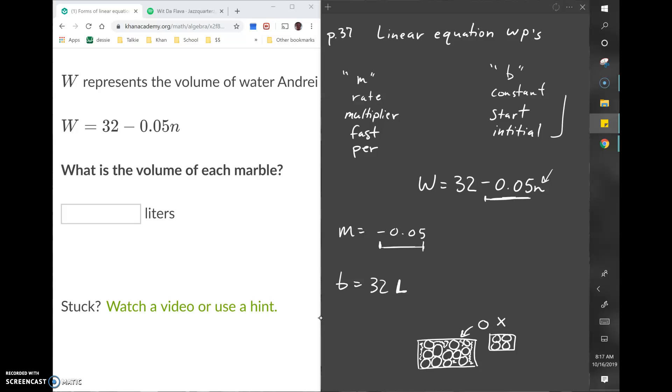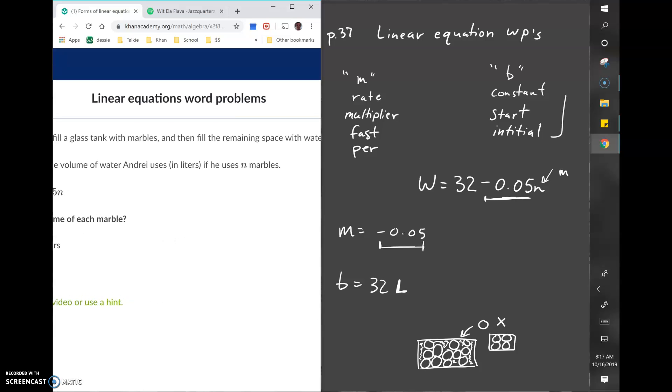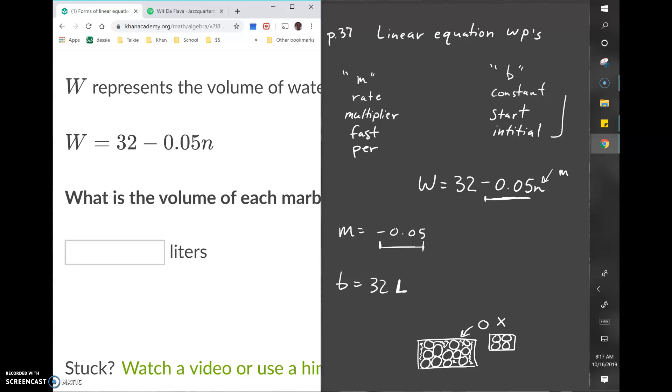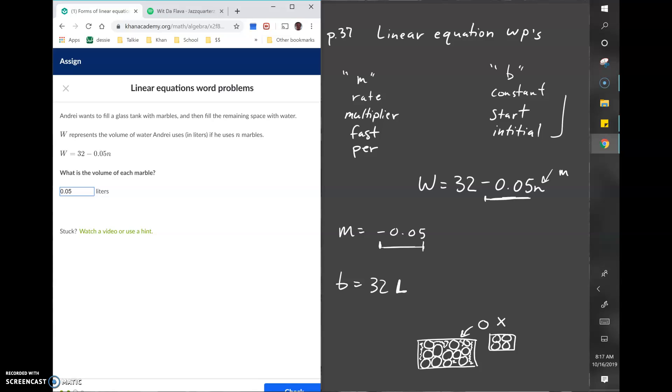The question asks what is the volume of each marble. Because the slope or rate is the number being multiplied to n, which represents marbles, the volume of each marble is 0.05, and we don't need to put it as a negative because of the way the question's asked.